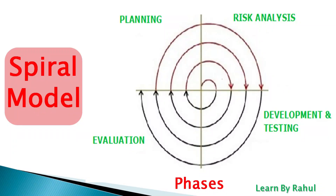Welcome back to Learn by Raul. Today we are going to discuss the Spiral model, which is one of the most important software development life cycle models. We can understand this model through four phases: first, planning; second, risk analysis; third, development and testing; and fourth, evaluation.